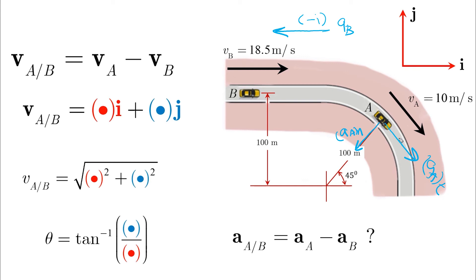The tangential a will have two components, one in the i and one in the negative j. And the normal acceleration here will have a negative i component and a negative j component.